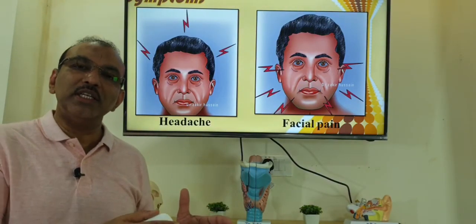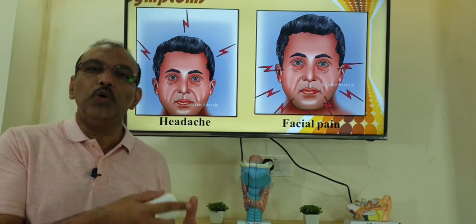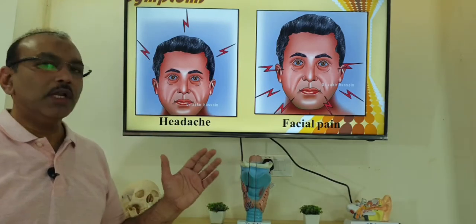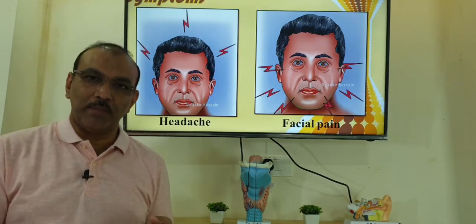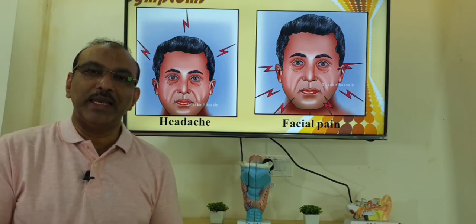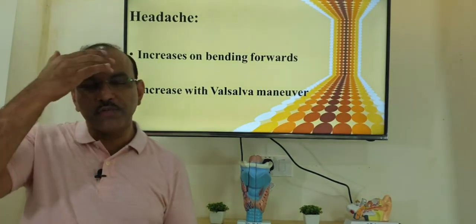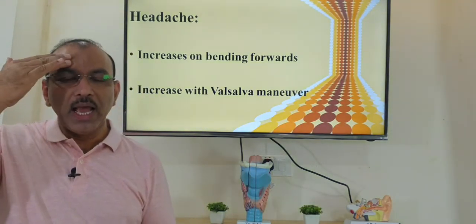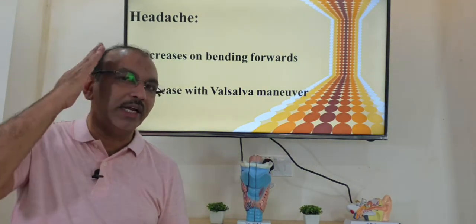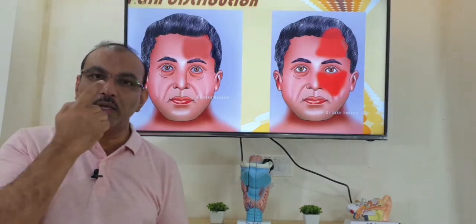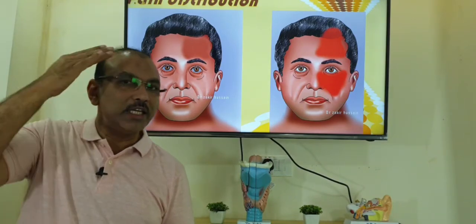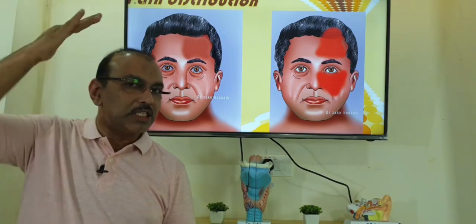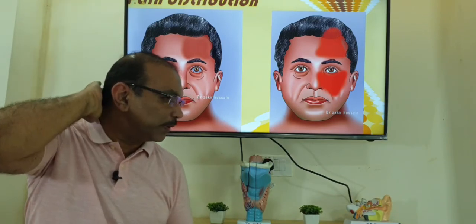It starts with acute sinusitis and can prolong and extend to chronic rhinosinusitis. Coming to the complaints of the patients: they have headache and facial pain, and the area of distribution depends upon the sinus involved. If it is frontal, the pain is in the forehead. If maxillary, the pain is in the cheek and can radiate to the temporal area. If it is the ethmoid sinuses, pain will be around or behind the eye. If sphenoid, it can be in the temporal area, spreading to the vertex or occipital region.